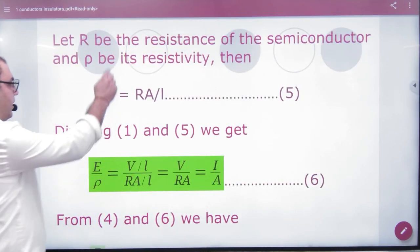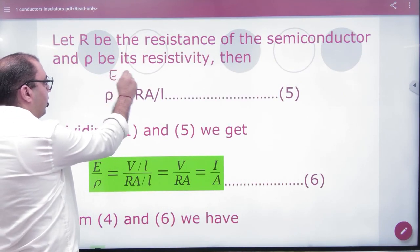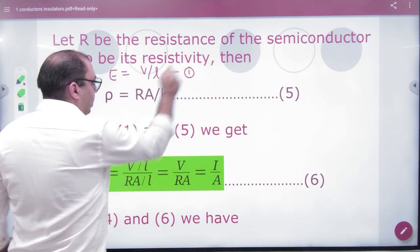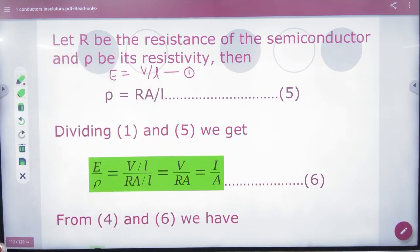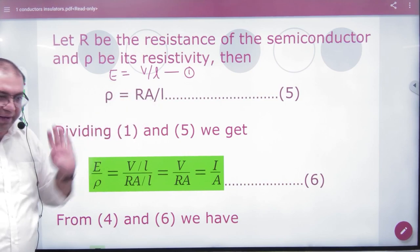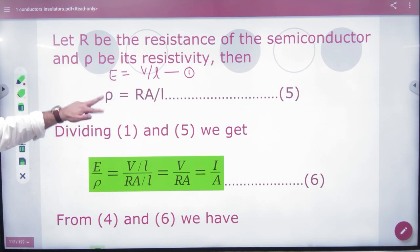You made the first equation: electric field is equal to potential difference by L. And you can see the result of this electricity that rho is RA by L. So we divide both E and rho.